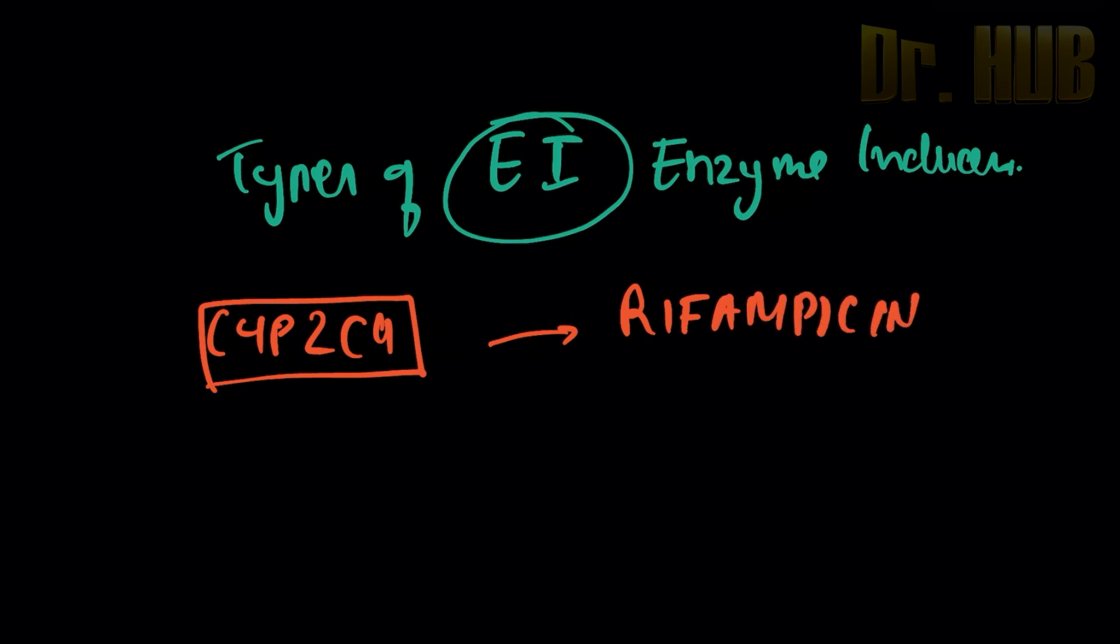Then comes CYP 2C9 and 10. So this is associated with the phenobarbital as well as the rifampin.